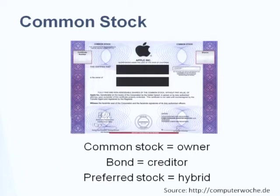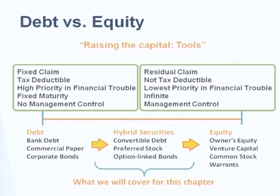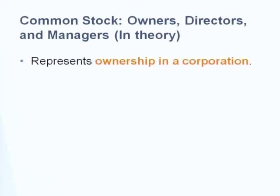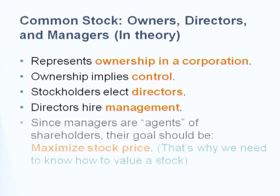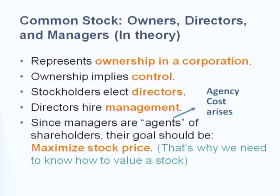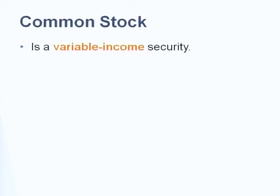When you buy a bond, you are a creditor of the firm. We will focus on the right side of this picture, which is equity. So with ownership, when you buy common stocks, you are part of the ownership. Ownership means control, and your job is to elect the board of directors, and the board will hire or fire management. Management needs to act as the agent of the firm.